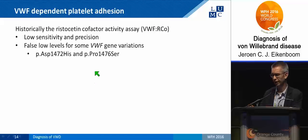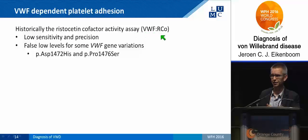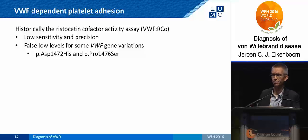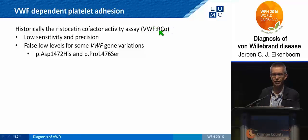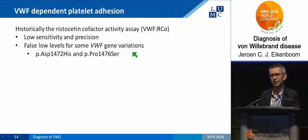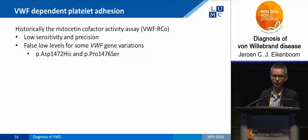For the functional test estimating platelet-dependent fulvirate factor activity, historically we used the ristocetin cofactor activity assay. In that assay, fixed donor platelets are mixed with the patient's plasma, and by adding ristocetin, the fulvirate factor is activated and binds to the donor platelets; this aggregation is measured as a measure of functional activity. The problem is low sensitivity and poor precision. Additionally, some variants in the fulvirate factor gene have been identified that do not cause bleeding but interfere with ristocetin binding to fulvirate factor, leading to underestimation of the ristocetin cofactor activity — a falsely reduced level that does not reflect real activity.